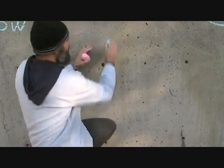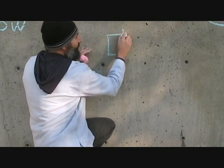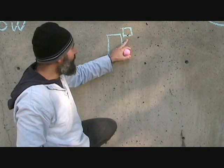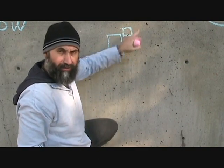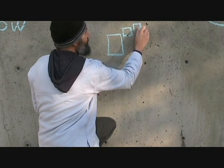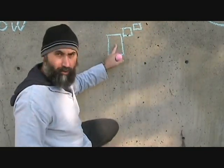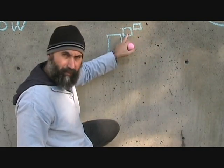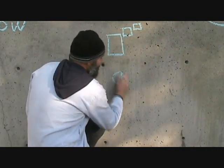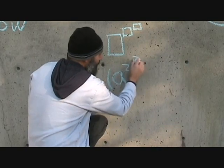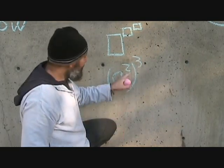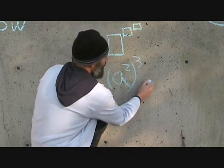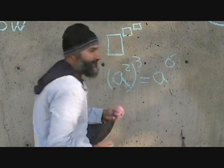What we're going to do now — obviously, someone would have thought of the idea: what happens if this goes to an exponent as well? What if there's another exponent here? The way it works is: exponents to an exponent — these guys multiply each other. So if you had a to the power of 2, to the power of 3, then 2 and 3 multiply each other, so it becomes a to the power of 6.